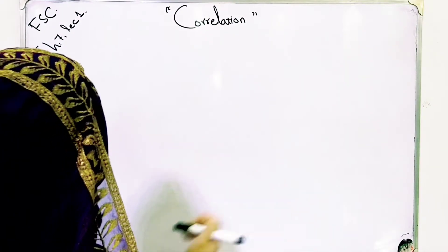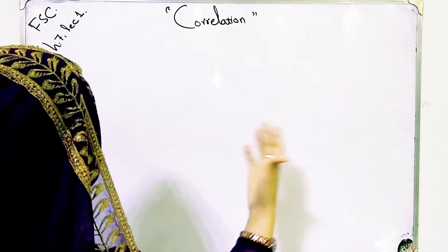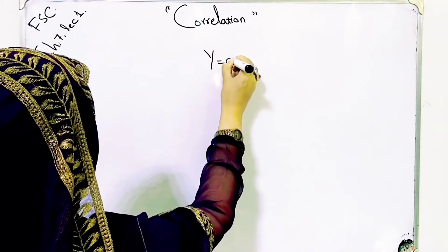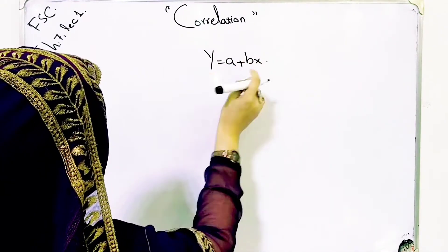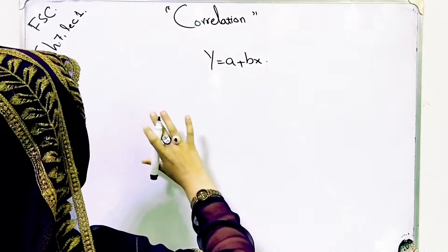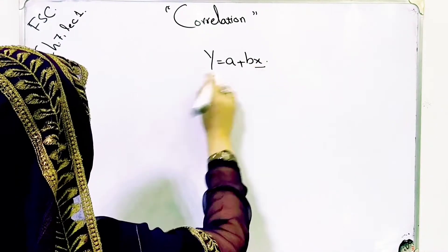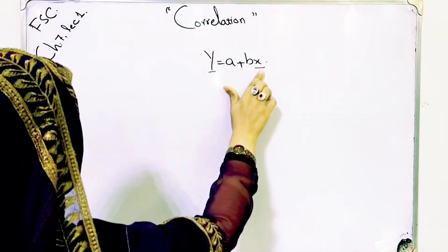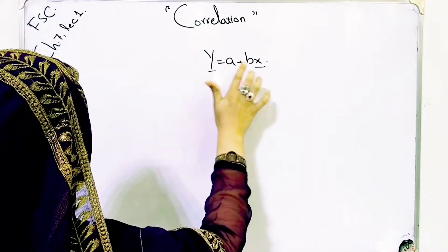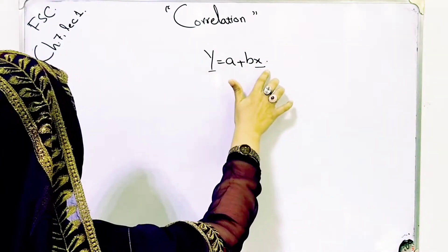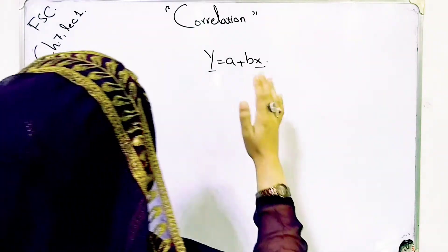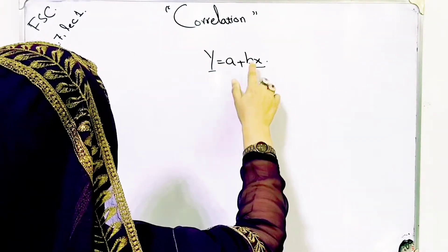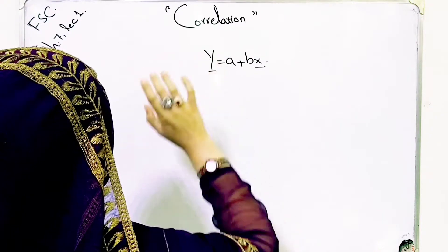We have previously discussed regression, which describes the difference between two variables. When you have the equation a plus bx, the dependency between the two variables is called regression. The fixed variable is the independent variable and the other is the dependent variable. If the values of the independent variable change, automatically the values of the dependent variable change.